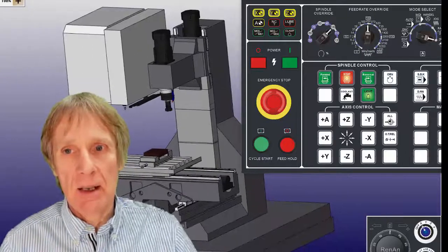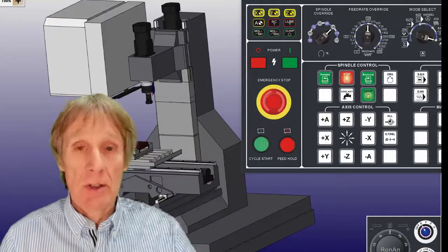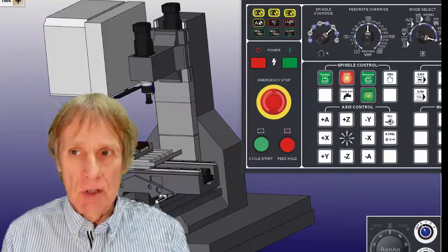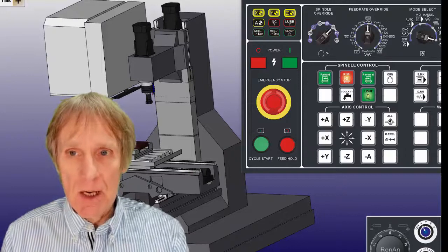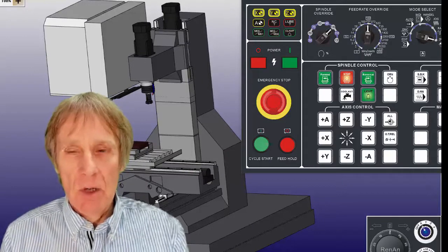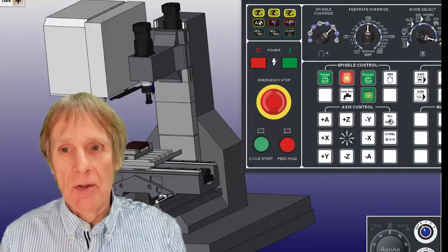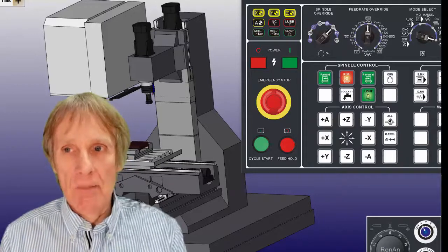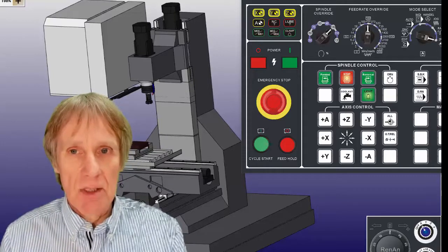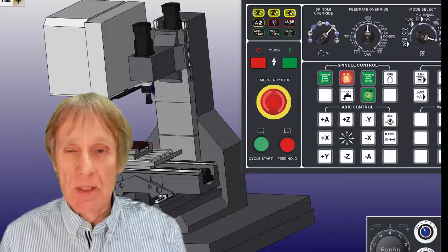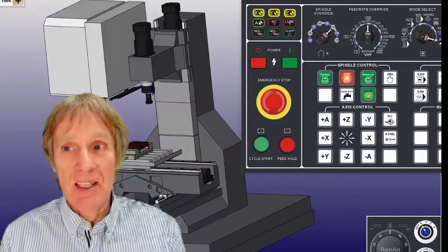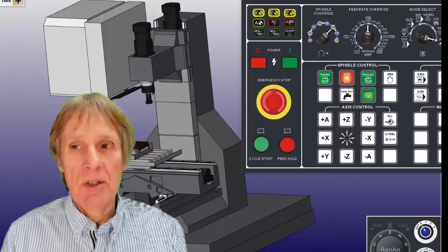Now my machine's referenced; it's all ready to go. That's all I really need to do at the beginning of the shift or whatever when I first turn this machine on. Now some machines you don't need to do this. Modern machines made in the last few years will have what we call absolute encoders, and these absolute encoders mean the machine knows where it is even when you switch it off.